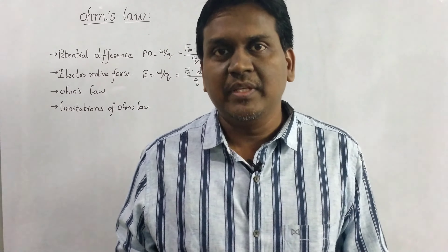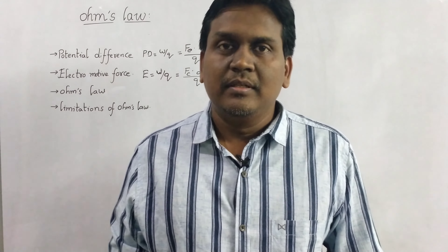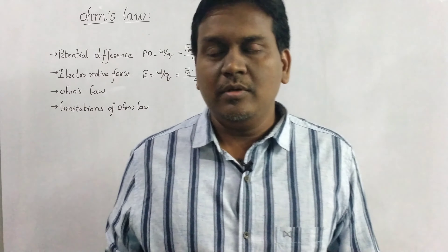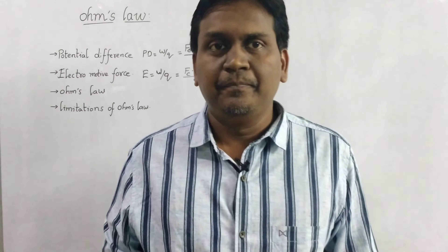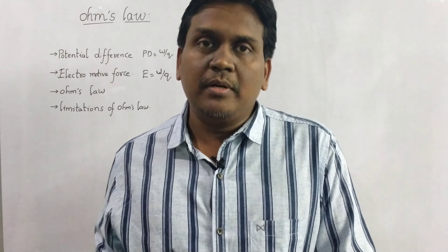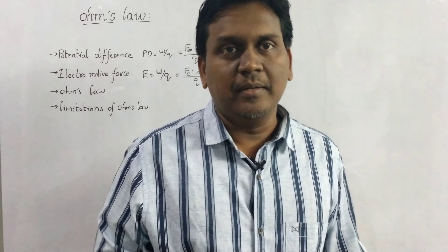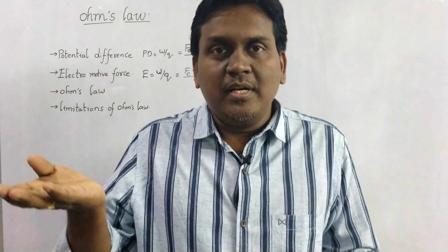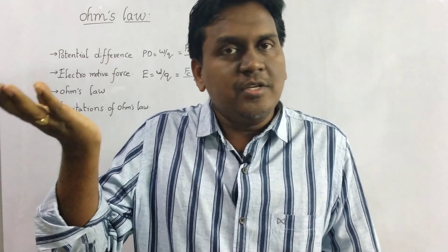If you consider the unit, work unit is Joule and charge unit is Coulomb. So the unit is Joule per Coulomb, and 1 Joule per 1 Coulomb is equal to 1 Volt. So this is about potential difference.